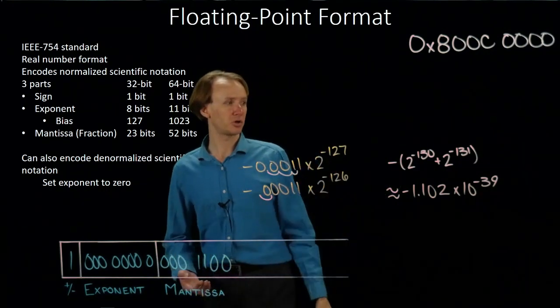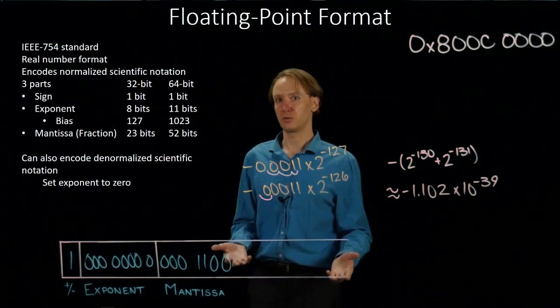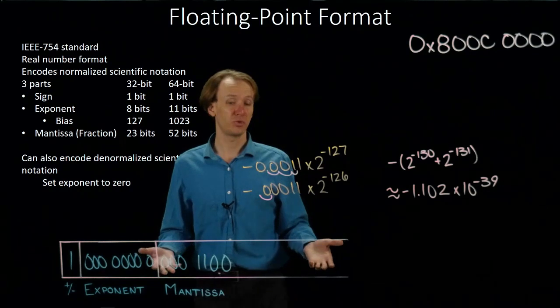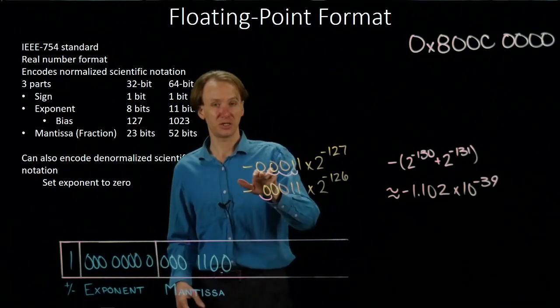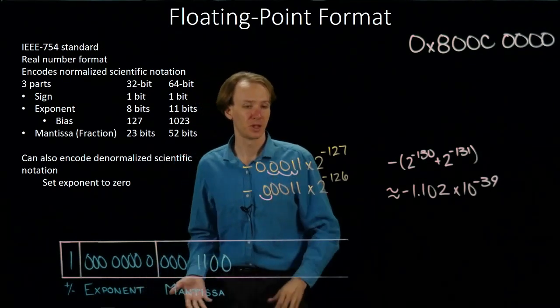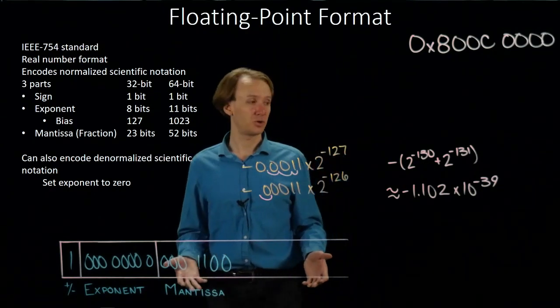So this is a really small number, but it's smaller than what we could have gotten without using a denormalized number. We would have been limited by the 2 to the minus 127th that we would have had otherwise, and would have been forced to assume the first bit here in this place was actually a 1 instead. But it's not. We were able to move it over a couple more places by using the denormalized notation instead.